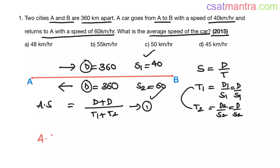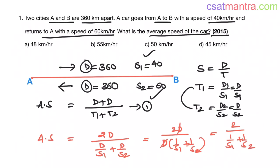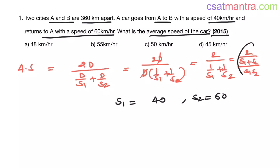So average speed equals d plus d is 2d, divided by d by s1 plus d by s2. This equals 2d divided by d times (1 by s1 plus 1 by s2). I am taking d common. 1 by s1 plus 1 by s2. d cancels out. This is 2 divided by 1 by s1 plus 1 by s2. This equals 2 divided by s1 plus s2 over s1 times s2.